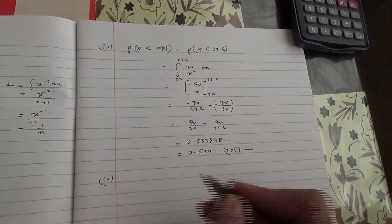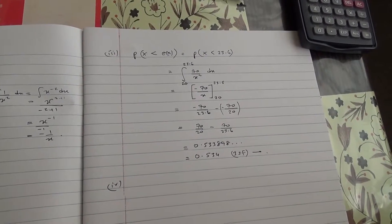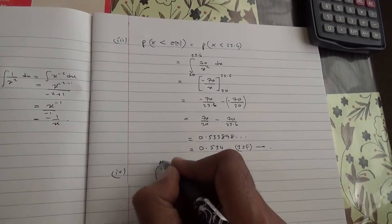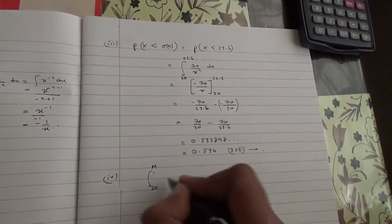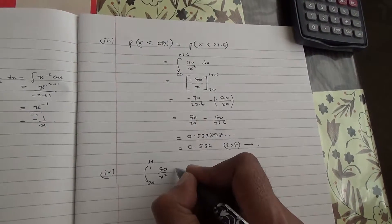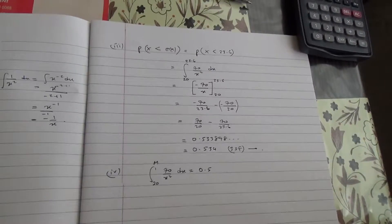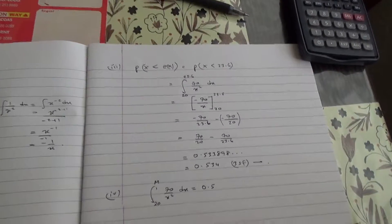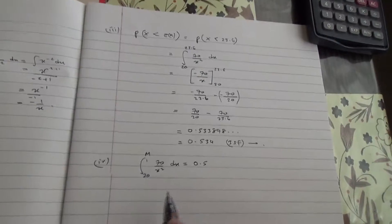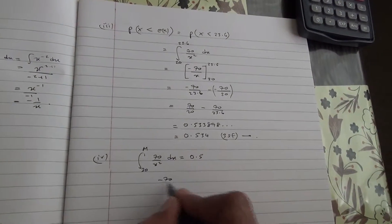For the fourth part, we need to determine whether the mean is greater or less than the median. To find the median m, we set the integral of 70 over x squared dx from 20 to m equal to 0.5, because the median splits the distribution at cumulative probability 0.5.